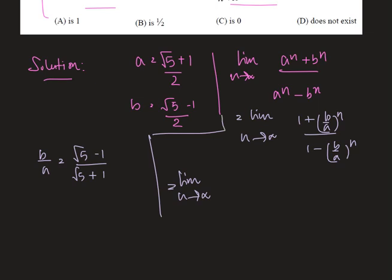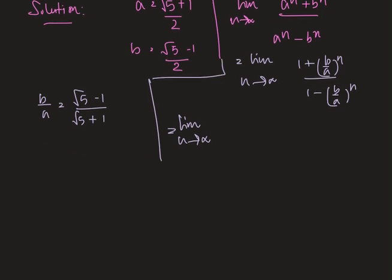We can write the limit by multiplying both the numerator and denominator of this fraction with root 5 minus 1.